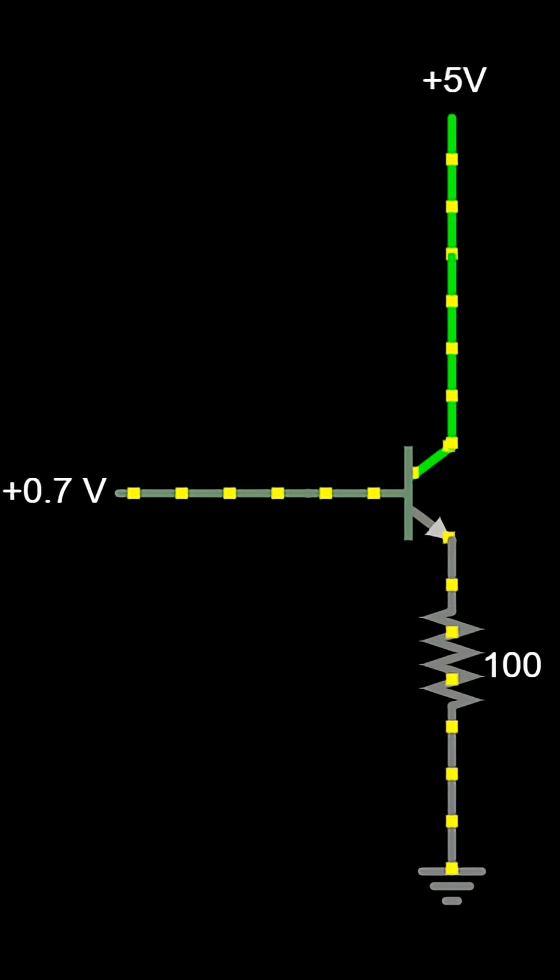A small base current controls a much larger collector current. This principle makes the transistor work as a switch or as an amplifier. There are mainly two types: